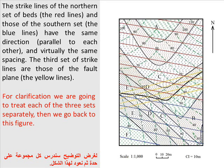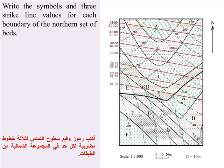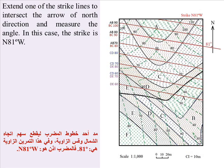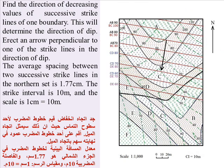Write the symbols and three strike line values for each boundary of the northern set of beds. Extend one of the strike lines to intersect the north direction arrow and measure the angle. In this case, the strike is N81°W. Find the direction of decreasing values of successive strike lines of one boundary — this determines the direction of dip — and erect an arrow perpendicular to one of the strike lines in the direction of dip.